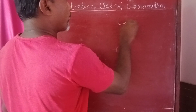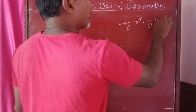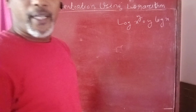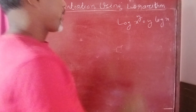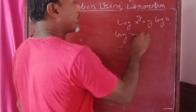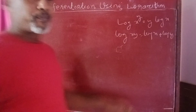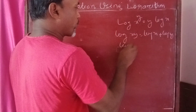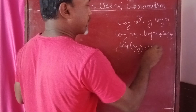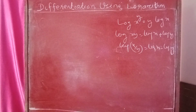The key log formulas applied are: log of x to the power y equals y into log x; log of x times y equals log x plus log y; and log of x divided by y equals log x minus log y.